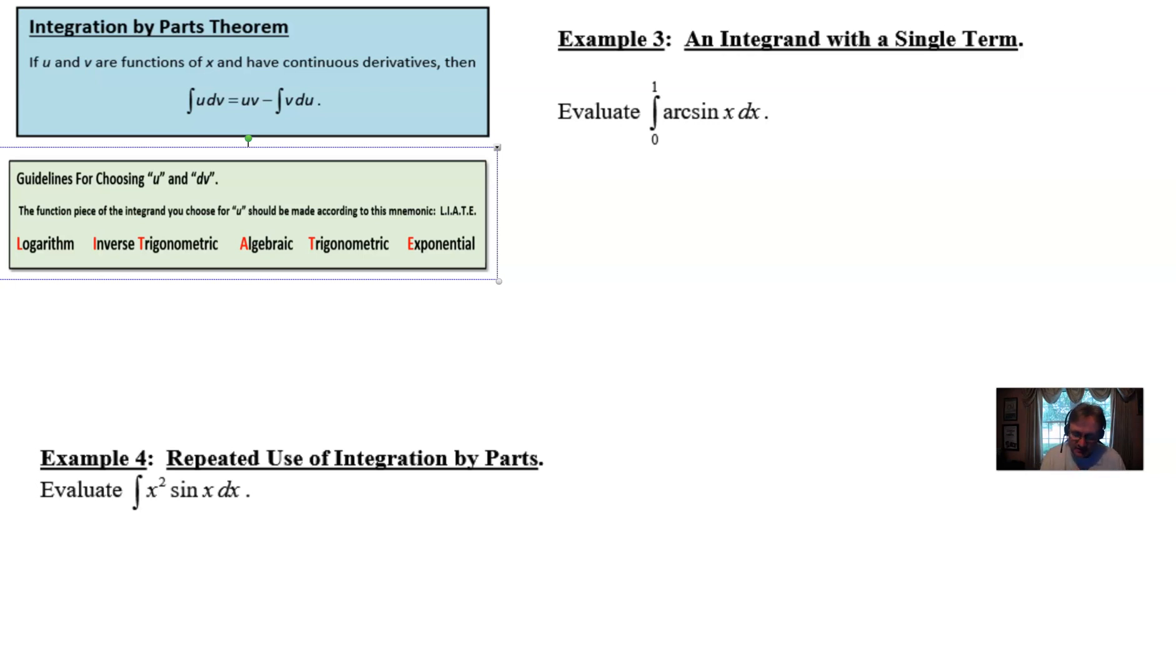So if you remember from the previous videos we have our structure of the integration by parts, our u dv formula, where the integral of u dv is equal to uv minus the integral of v du. And in addition to that we have our progression of what values we should be looking at to be equivalent to u.